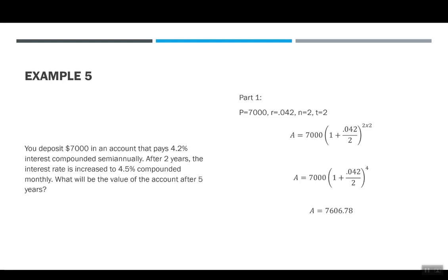For part one, we started with $7,000. The rate of interest was 4.2%. This lasts for two years, and the compounding was semi-annually, which means N is 2. So I put these pieces into our formula. I have $7,000 times 1 plus 0.042 over 2 to the 2 times 2. At least this is an easy exponent, it's 4. I can plug this in my calculator and it says at the end of two years, I have $7,606.78. This amount is very important because it's the starting part for our next piece.